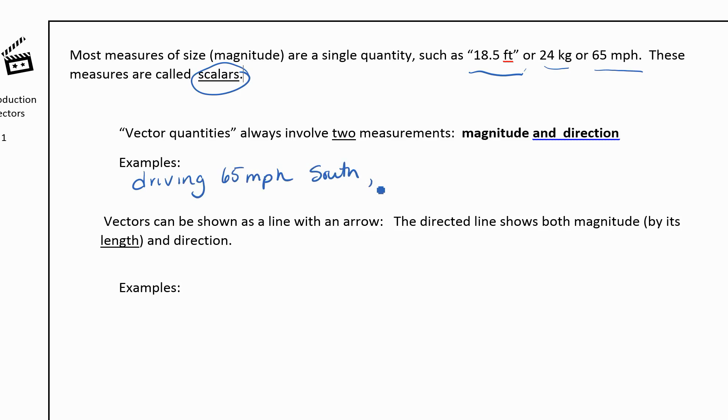And it doesn't always have to be like a direction like south. Maybe you've been in a physics class and you've seen problems where we talk about a force of maybe let's say five pounds acting downward on an object. So whenever you have a magnitude, so how big something is or how fast or whatever, and then a direction it's going on something, this is a vector.